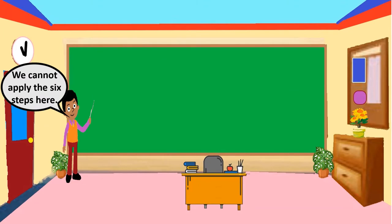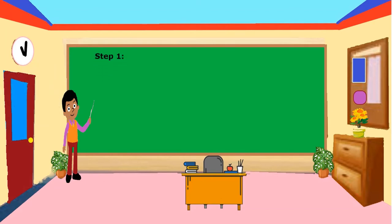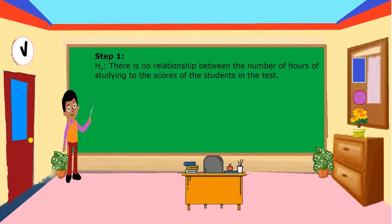We will apply the steps here. Step 1 — the null hypothesis: there is no relationship between the number of hours of studying and the scores of the students on the test. In symbols, R equals 0.